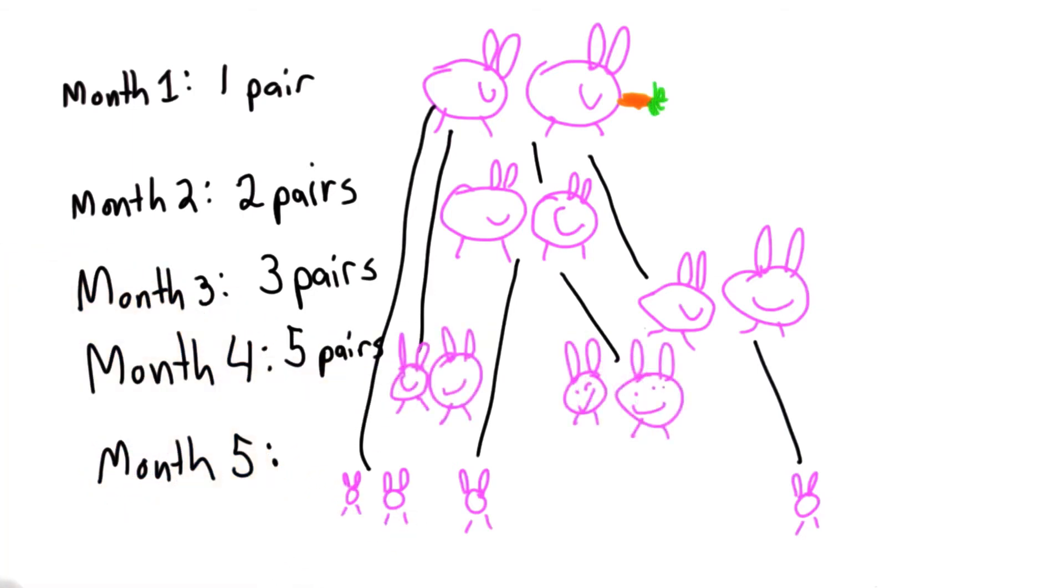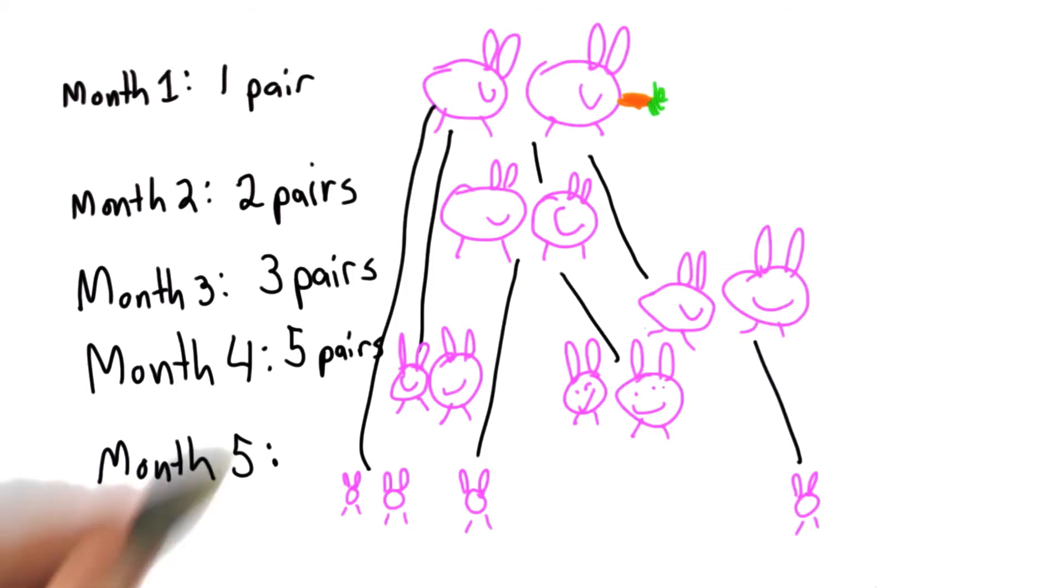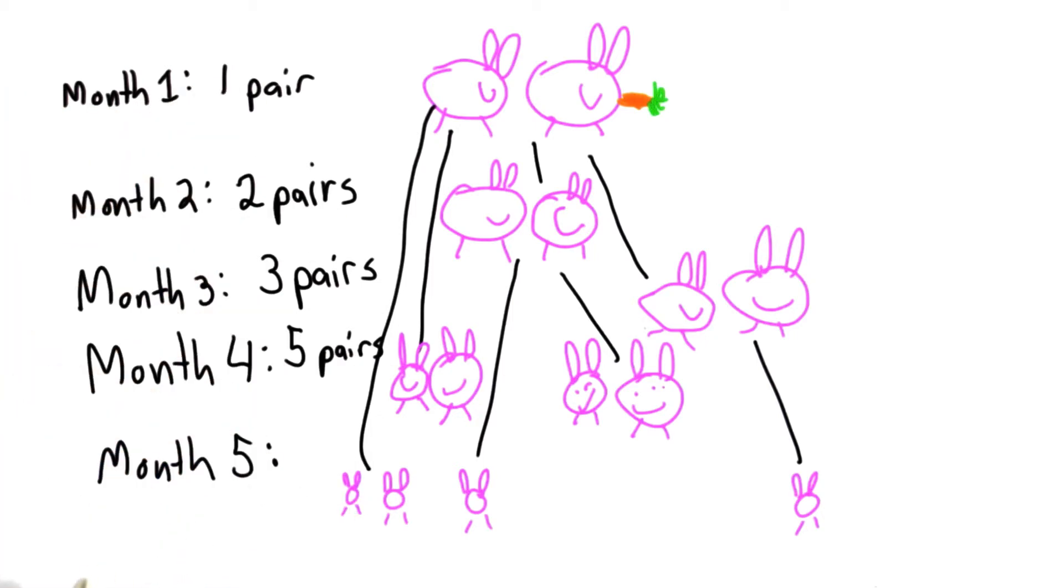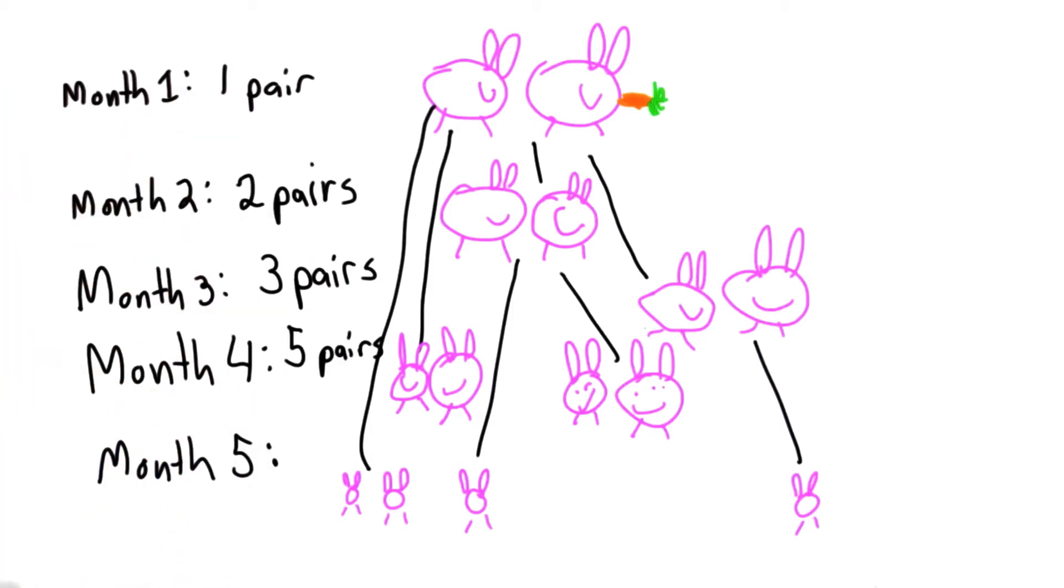This isn't a very accurate model of how rabbits reproduce. It's good for us. If it was an accurate model, it would only take a few years for rabbits to control the entire planet. But it's an interesting mathematical model, and we can write this in a more formal way.